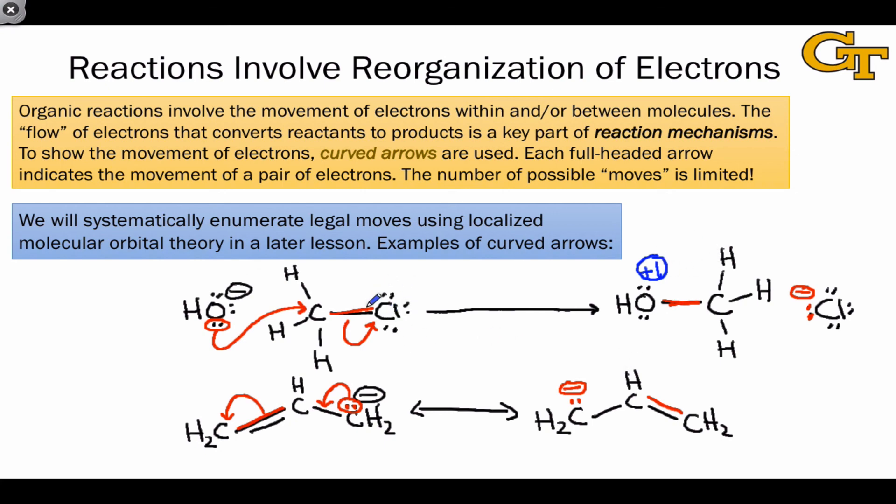Likewise, the chlorine atom that's serving as the electron sink is going from neutral to negative. That's because it has a bond in the starting material, and so formally it has one of the two electrons in the bond. But once we push that pair of electrons onto chlorine, it now has two electrons formally, where it used to have one, and so its formal charge decreases by one unit.